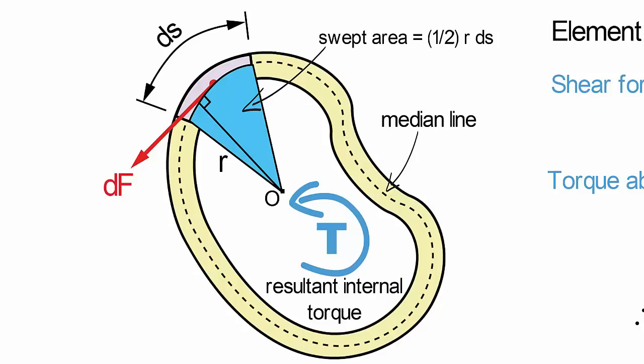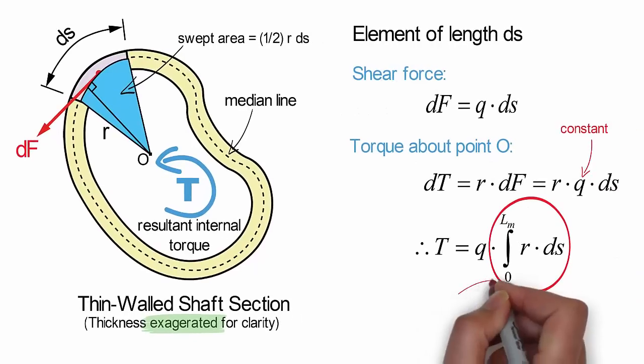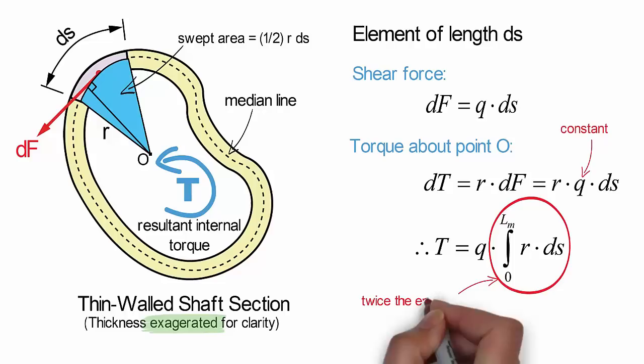Recognizing that the area swept by r around the entire perimeter is equal to the area enclosed by the median line, we can see that the integral of r times ds must be equal to twice the area enclosed by the median line.